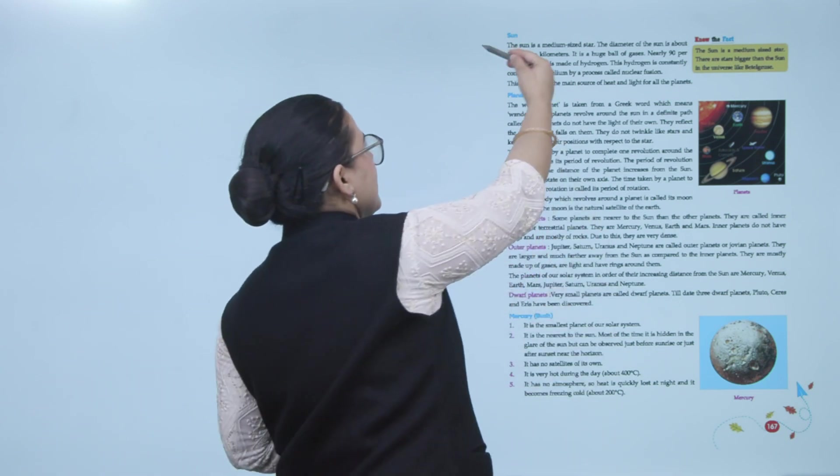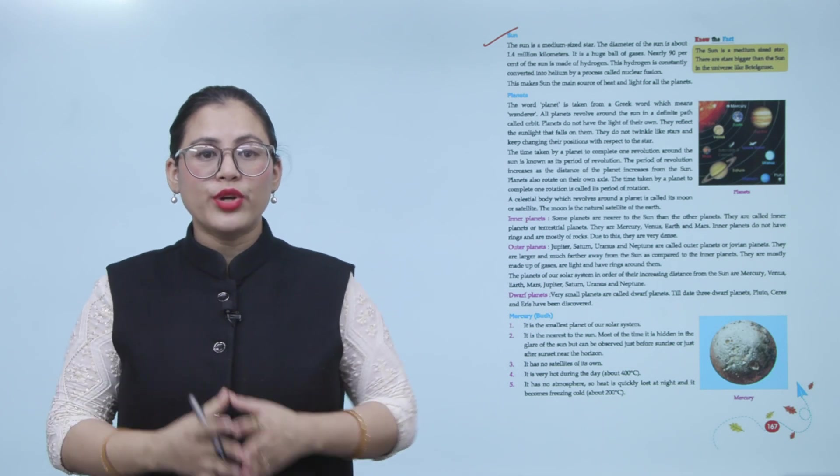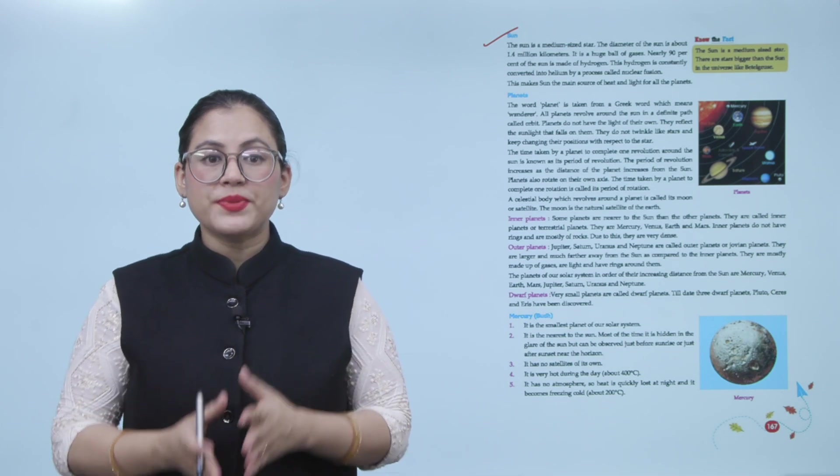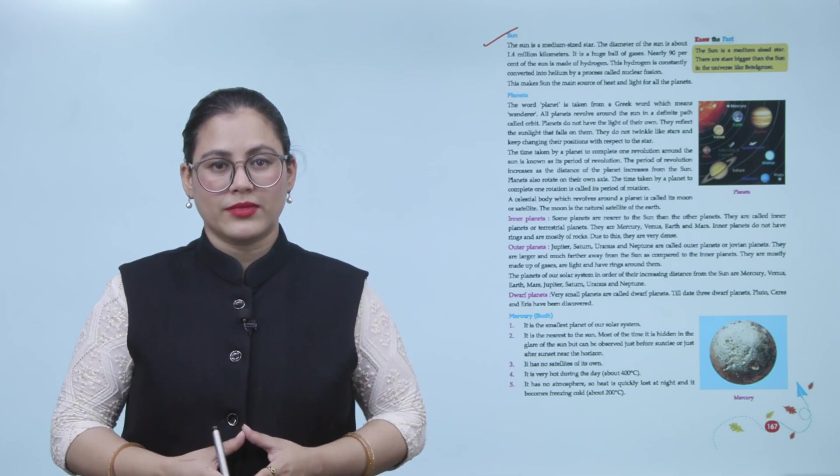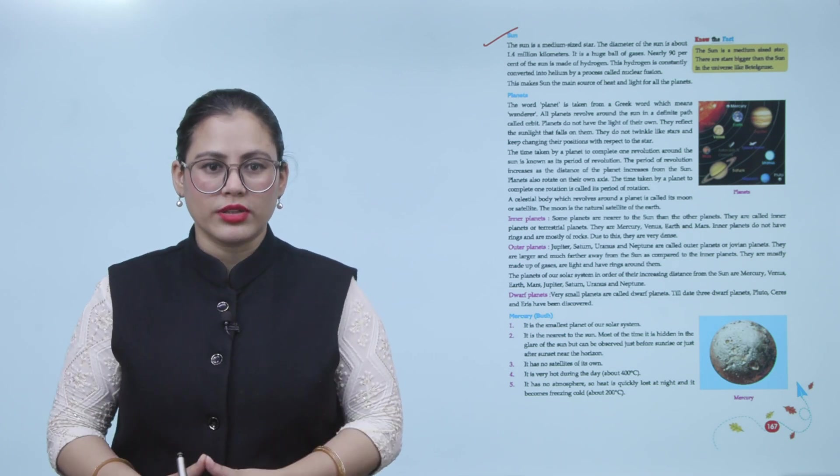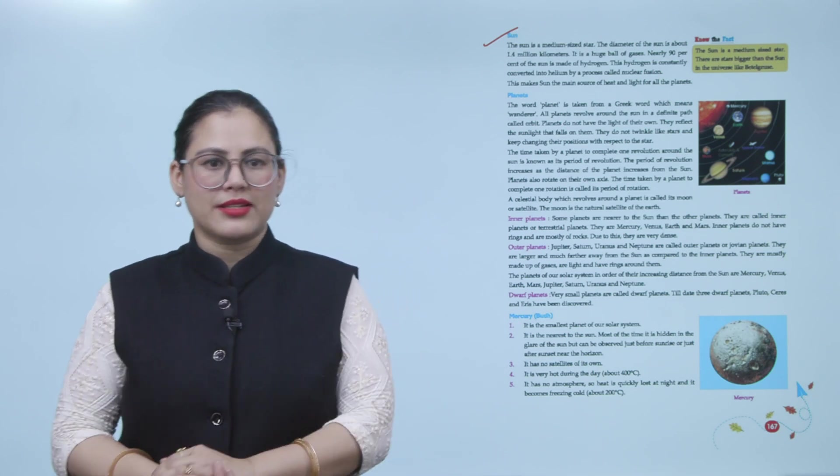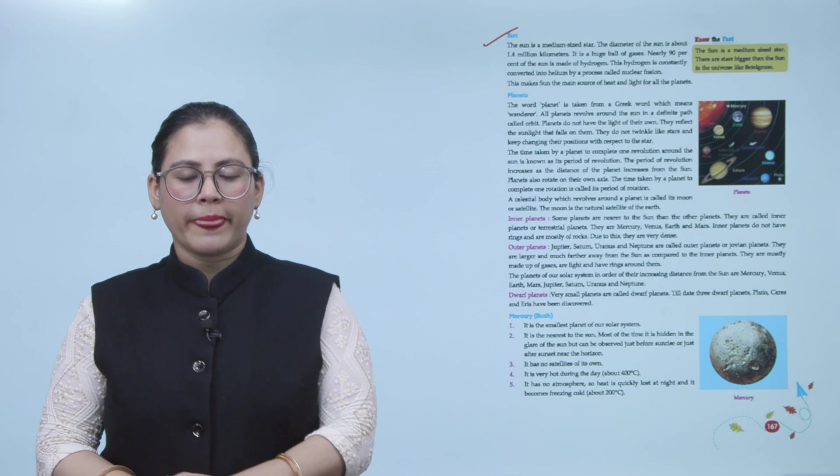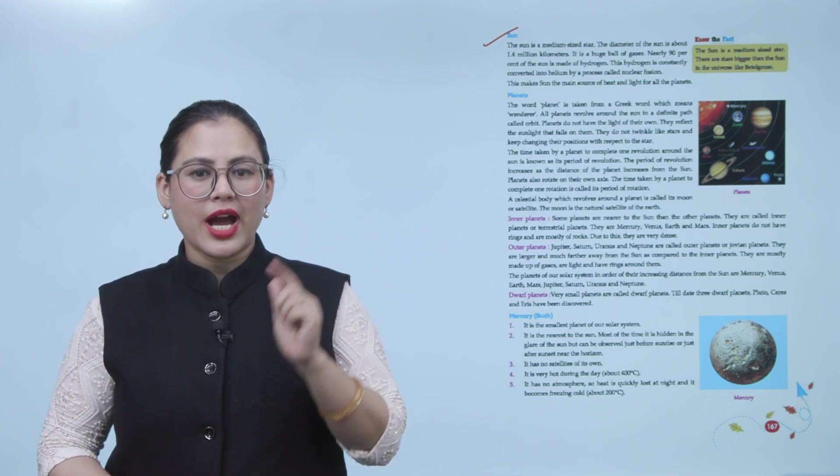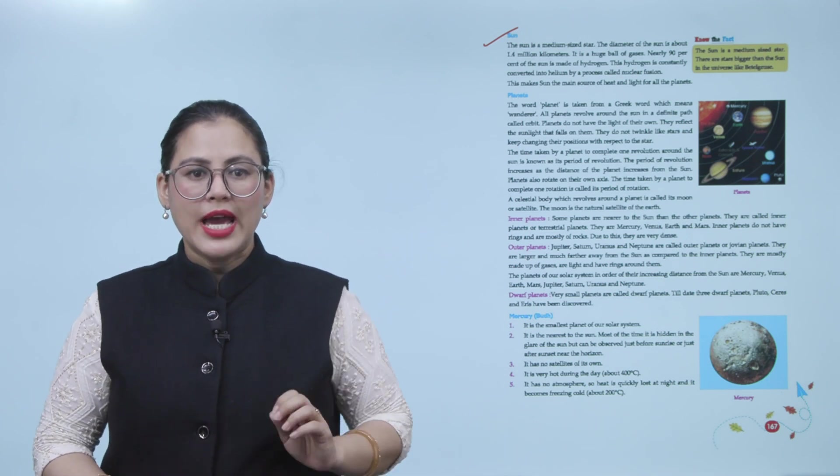Sun. The sun is a medium-sized star. The diameter of the sun is about 1.5 million kilometers. It is a huge ball of gases. Nearly 90% of the sun is made of hydrogen. This hydrogen is constantly converted into helium by a process called nuclear fusion. This makes the sun the main source of heat and light for all the planets.